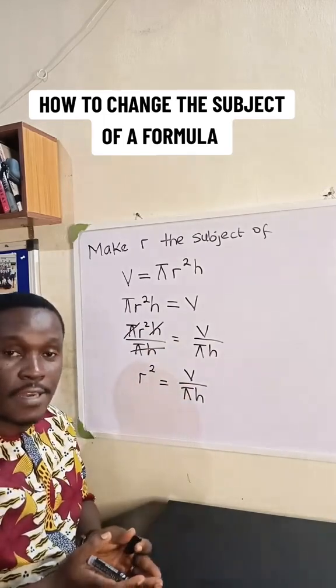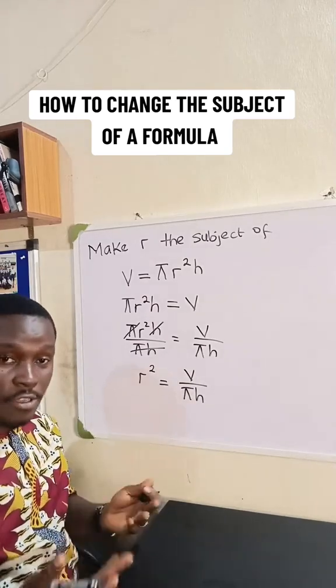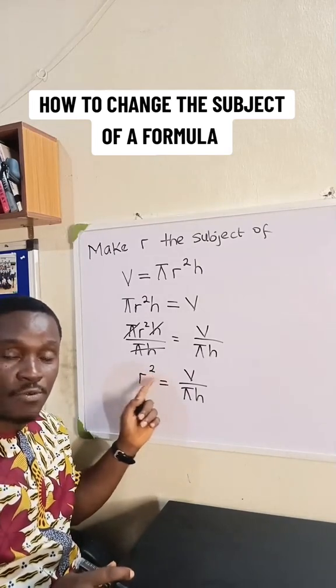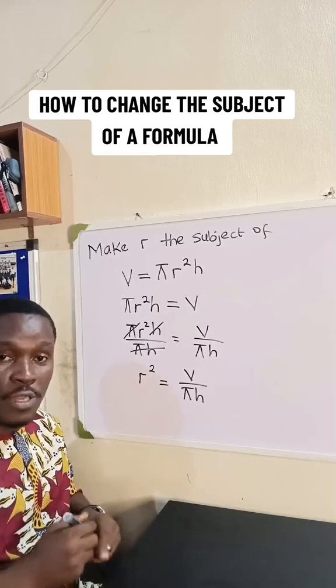So have we gotten our final answer? Is r now the subject of the formula? Not yet because we still have an unwanted guest on the left, which is square. How do we eliminate square? We introduce the opposite of square, which is square root.